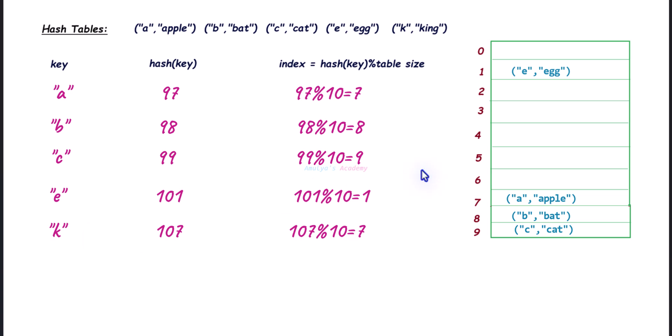First, let's talk about chaining. Chaining is a collision resolution technique where if multiple keys hash to the same index, they are stored in the same index or bucket, but each item is linked together using a linked list or any other data structure. Chaining allows you to store more than one key-value pair at an index, but those pairs must be linked together. So according to the chaining method, you can store both 'k' and 'king' at index 7, linked together.